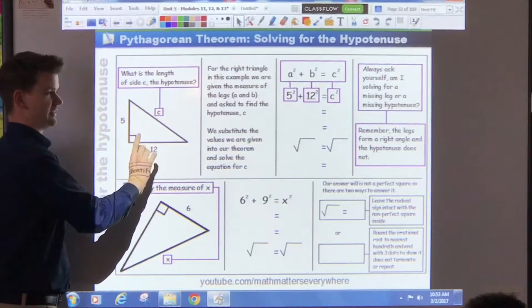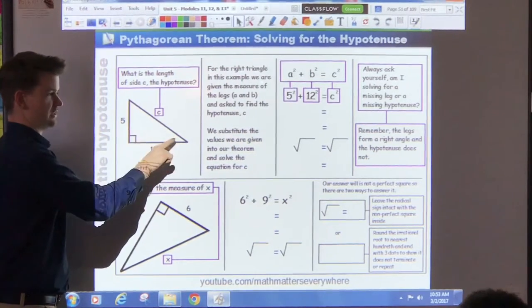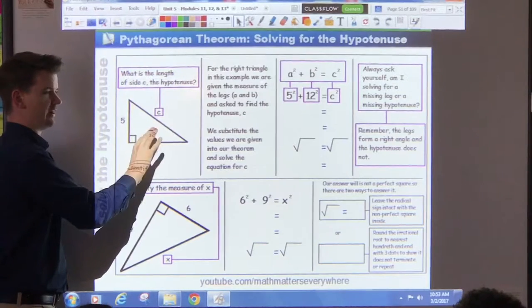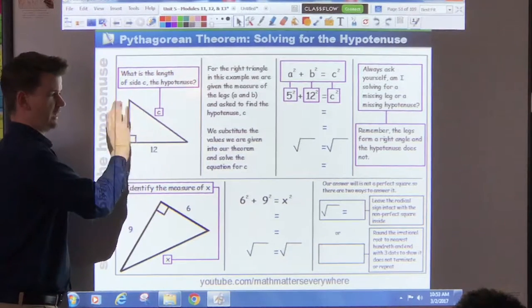For this example here, we're being asked to find the length of the diagonal side. This, if you notice, does not form a right angle. This is the what? A leg or the hypotenuse? The hypotenuse.